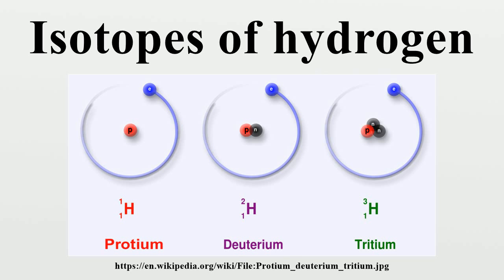Water enriched in molecules that include deuterium instead of protium is called heavy water. Deuterium and its compounds are used as a non-radioactive label in chemical experiments and in solvents for 1H NMR spectroscopy. Heavy water is used as a neutron moderator and coolant for nuclear reactors. Deuterium is also a potential fuel for commercial nuclear fusion.